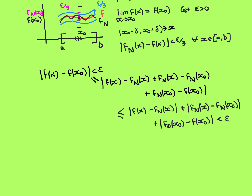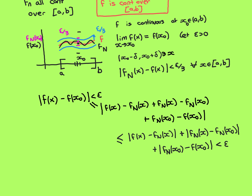And I know, as I've just argued, that all three of these things are strictly less than epsilon over 3, and therefore their sum is strictly less than epsilon. I've just changed that n to a capital N — it shouldn't have been a lowercase n, it should be a capital N.